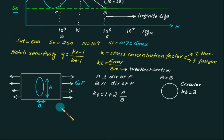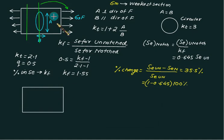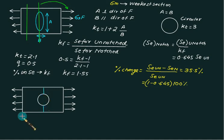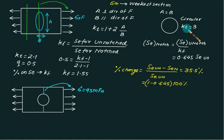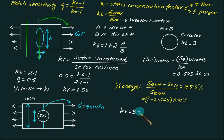The fatigue stress concentration factor Kf = SE(no notch) / SE(notch specimen). Consider a section with a hole — this is the weakest section. The nominal stress on the weakest section is given (e.g., 95 MPa), calculated based on the net cross-sectional area (e.g., (10 cm − 5 cm) × t). Since for a circular hole Kt = 3, we get sigma_max = Kt × sigma_nominal = 3 × 95 = 285 MPa.